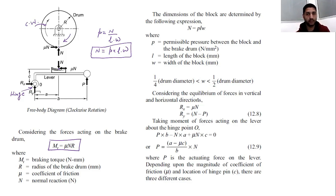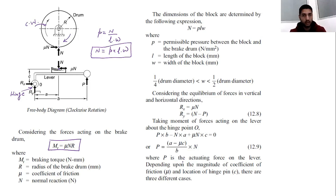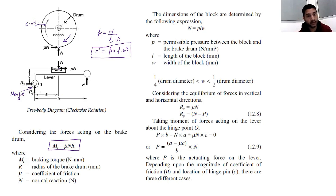To find the reaction forces, we apply three equilibrium conditions: horizontal equilibrium, vertical equilibrium, and moment equilibrium about any point. From horizontal equilibrium, Rx and μN are in opposite directions, so Rx − μN = 0, giving Rx = μN.